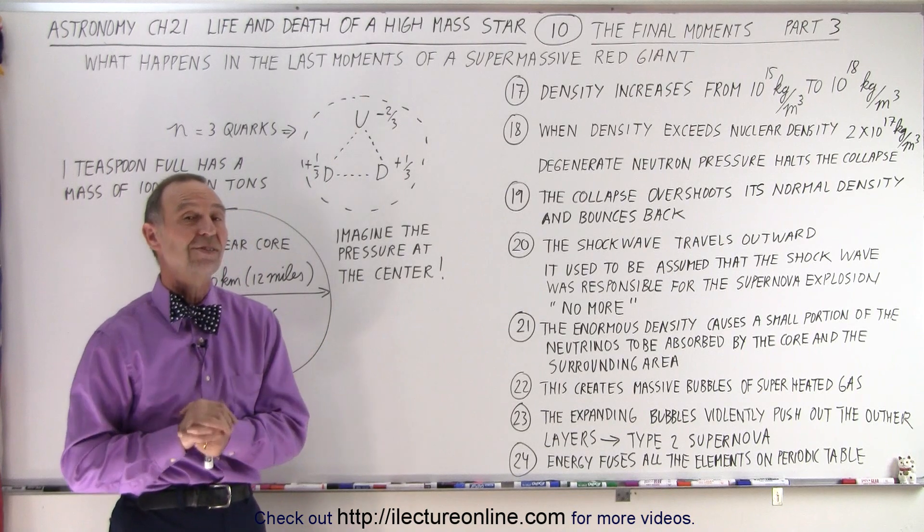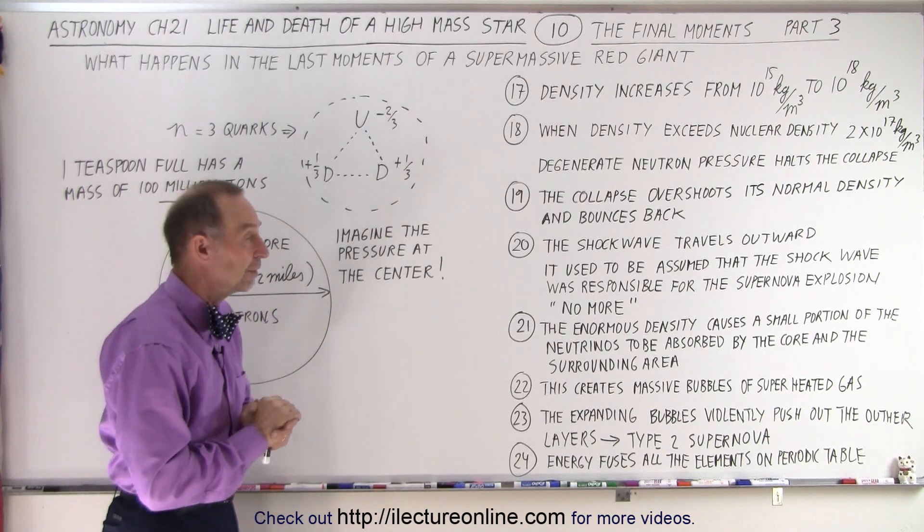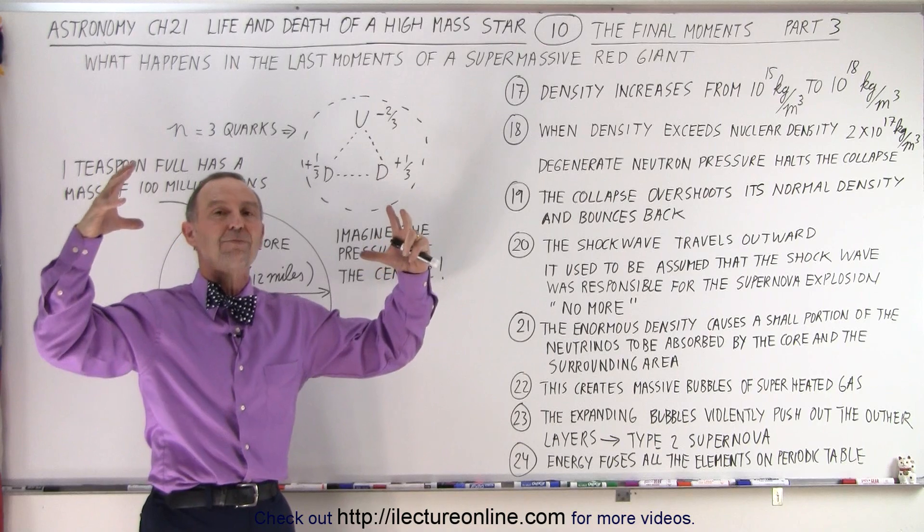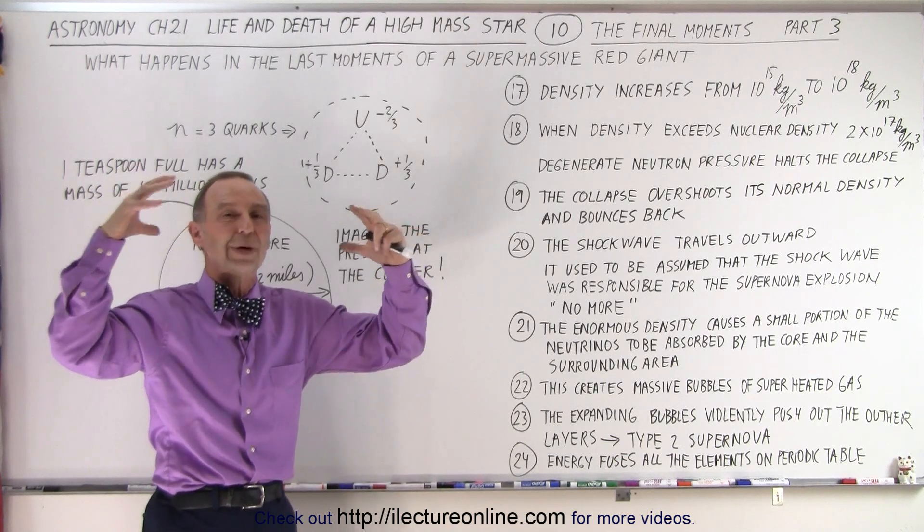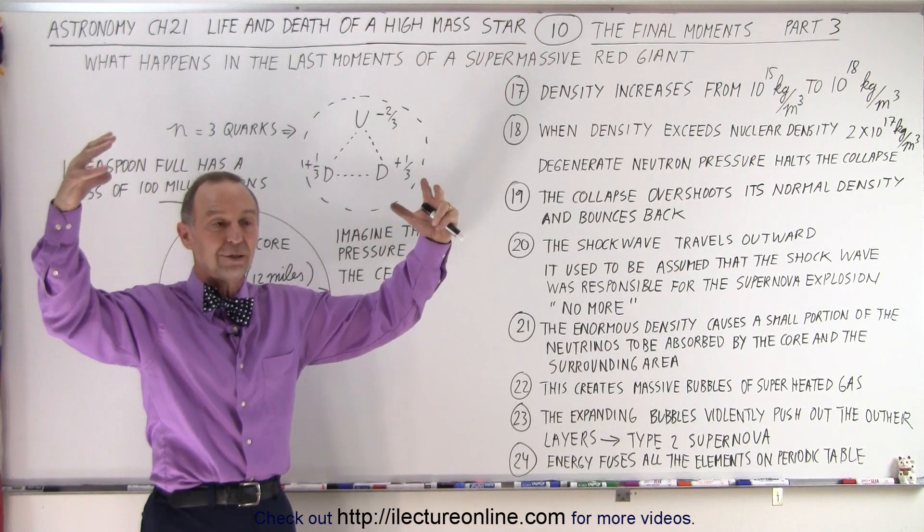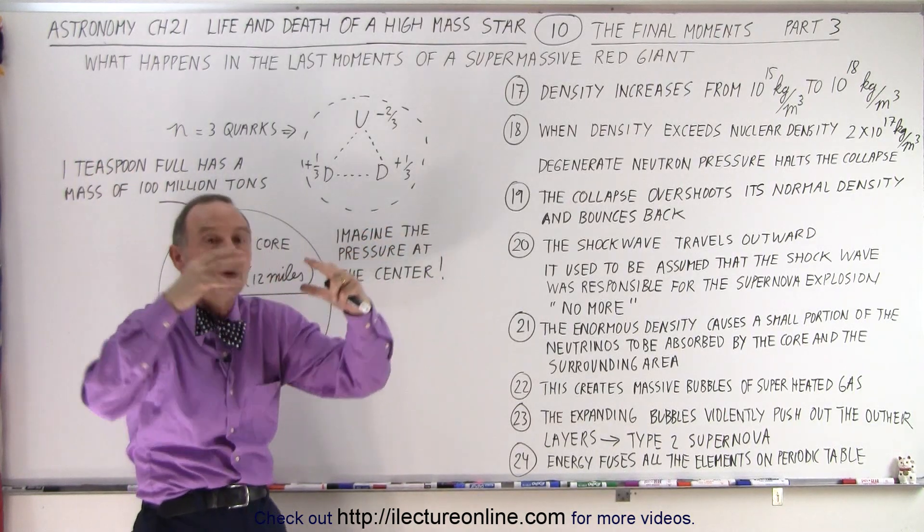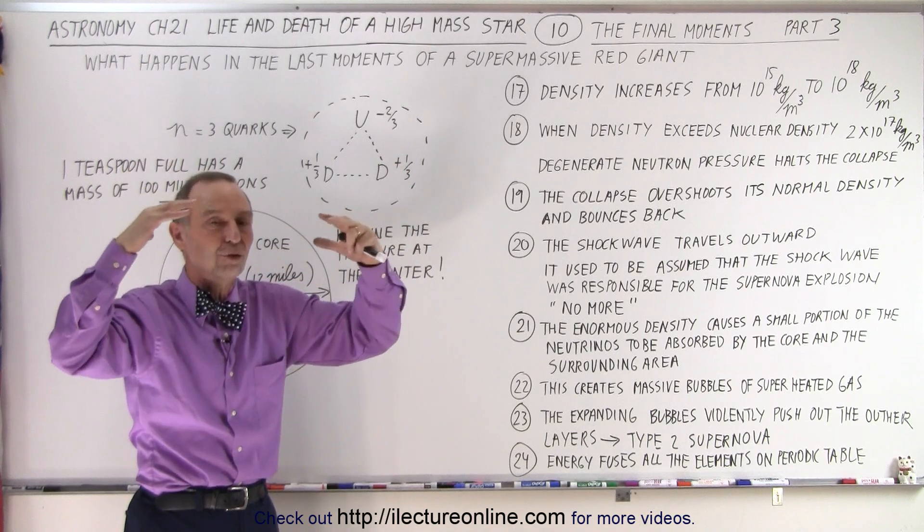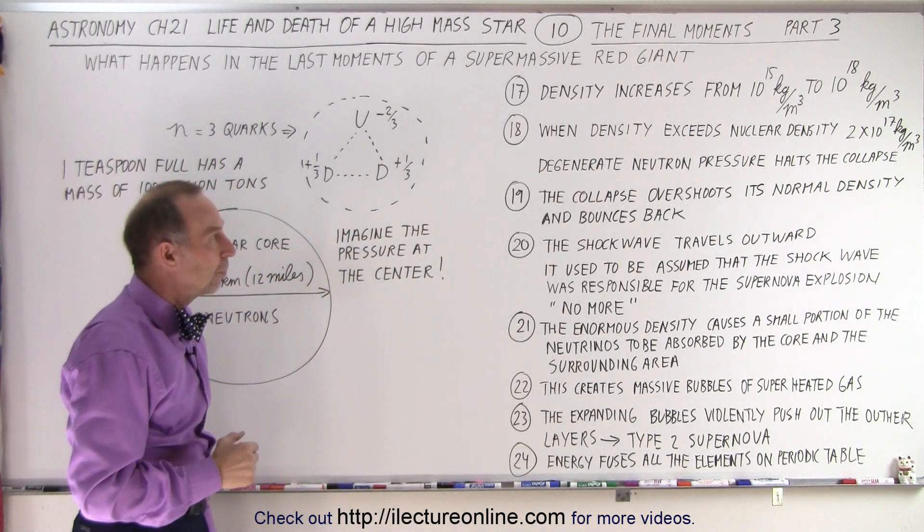This is even more dense than the nucleus of an atom, which is about 2 times 10 to the 17 kilograms per cubic meter. Essentially, the nuclear ball has been pressed, compressed to a density greater than its normal static density. It's basically like a ball that's being compressed, and that will re-decompress as it tries to get back to its normal density.